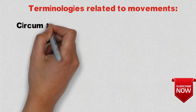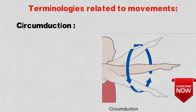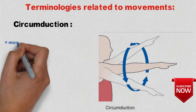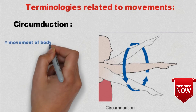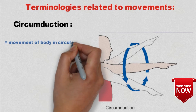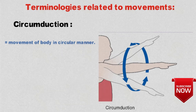The first movement term is circumduction. Circumduction refers to when a person is moving his or her body part in a circular manner. As we can see in the diagram, the limb is rotating in a circular manner.